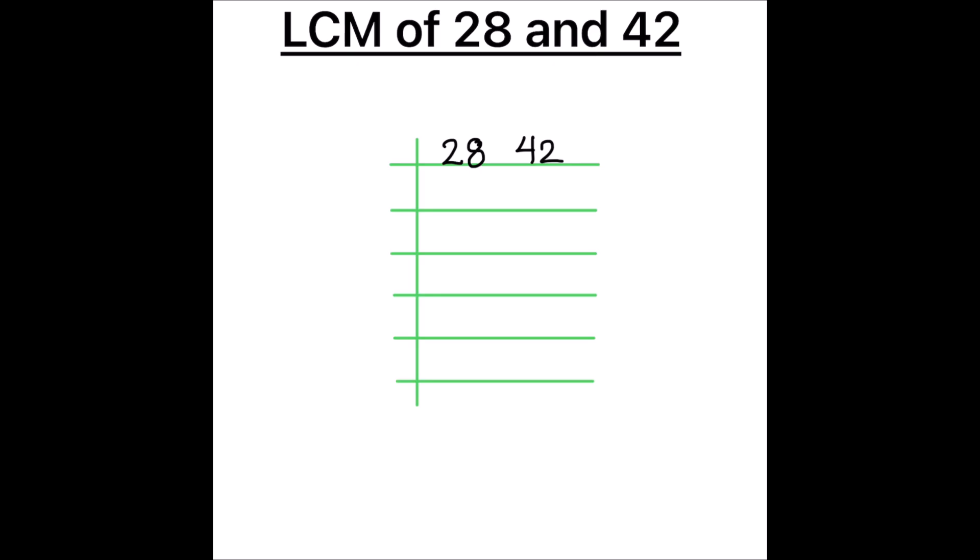So let's divide 28 and 42 as both the numbers are even. They are easily divisible by number 2. 2 times 1 is 2, 2 times 4 is 8.